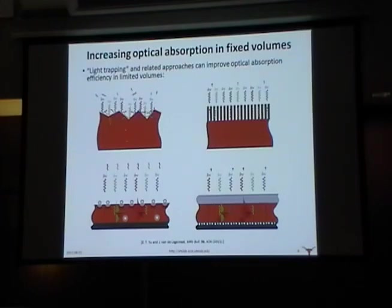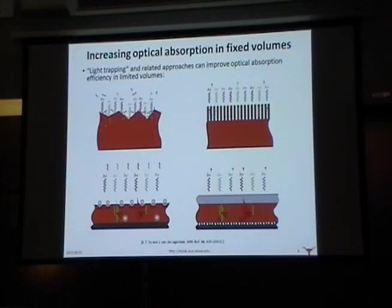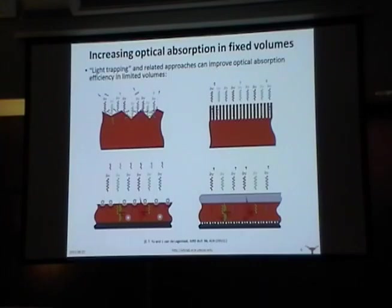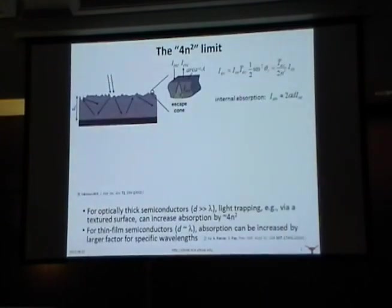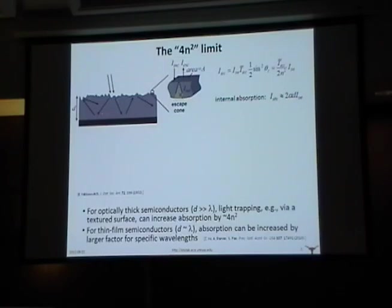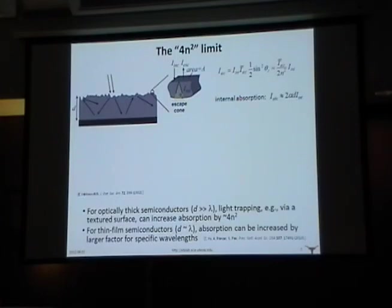Before discussing those in detail, I want to talk about what has been known for a long time about the degree to which you can improve absorption efficiency in a bulk semiconductor — meaning thickness much larger than the wavelength. This leads to what's called the 4n² limit, a result derived about 30 years ago: you can improve absorption efficiency compared to single-pass absorption by a factor of up to 4n², which for silicon is about 50. There will be equations on this at the end, but I'll just describe the basic idea of how you arrive at this.